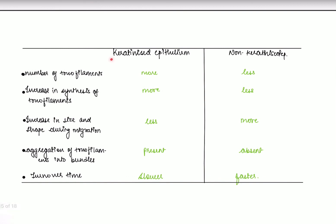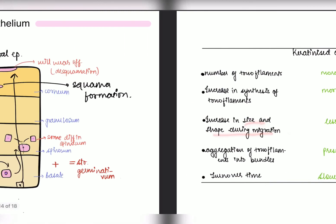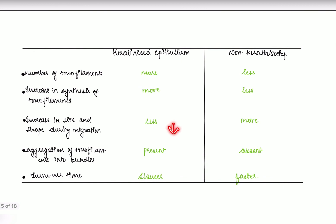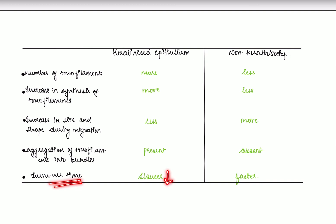Here is a comparison chart of keratinized epithelium versus non-keratinized epithelium. The number of tonofilaments is more in keratinized and less in non-keratinized, and their synthesis follows the same pattern. The increase in size and shape during cell migration is less in keratinized and more in non-keratinized epithelium. Aggregation of tonofilaments into bundles is present in keratinized and absent in non-keratinized. Finally, turnover time is slower in keratinized epithelium and faster in non-keratinized epithelium.